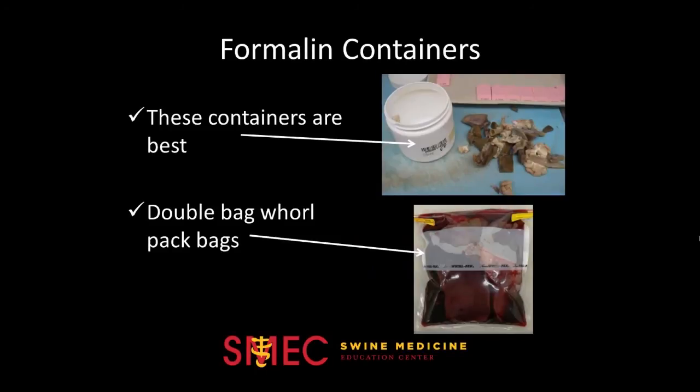Along with labeling, packaging is often improperly done when sending in samples, which can easily destroy a sample's integrity. The most common error is not completely sealing the container that formalin is in, so that formalin leaks out and contaminates fresh tissues. The container shown in the picture is the most effective way to package fixed samples, but if they must be in a bag, double-bag the sample to lessen the risk of spilling. It is actually illegal to transport liquid materials without double-bagging.